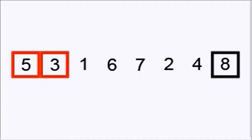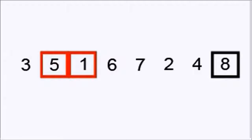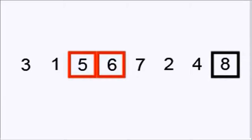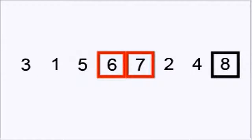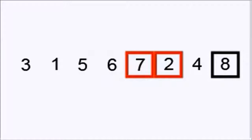Now we start again — 5 and 3, 5 is bigger than 3 we swap them, and 5 and 1, 5 is bigger than 1 we swap them. And you keep on doing this again a second iteration, but this time instead of going all the way to the end of the array you go to one less. This has the effect of bubbling the second biggest element all the way to the end, which is going to be 7.